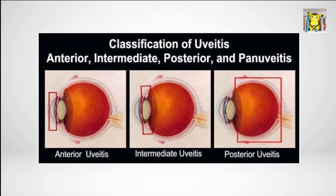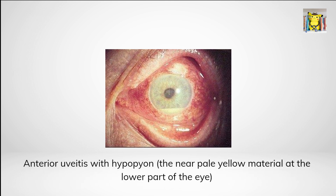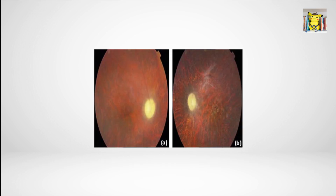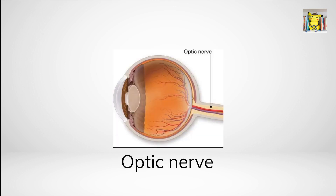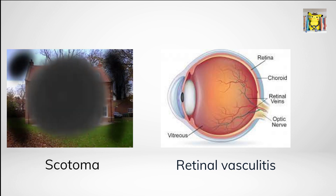Eye involvement may present as uveitis — anterior or posterior — or retinal vasculitis, potentially leading to vision loss. Anterior uveitis causes painful red eyes with hypopyon, which means the presence of inflammatory cells in the anterior chamber. Posterior uveitis results in painless visual impairment accompanied by floaters. Optic nerve involvement can lead to acute anterior ischemic optic neuropathy or chronic progressive visual loss. Retinal vasculitis manifests as painless blurry vision, visual floaters, and scotomas — dark spots in vision.